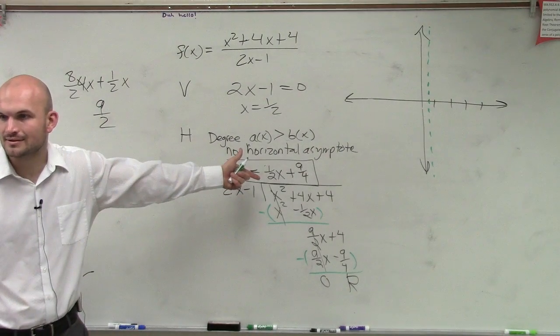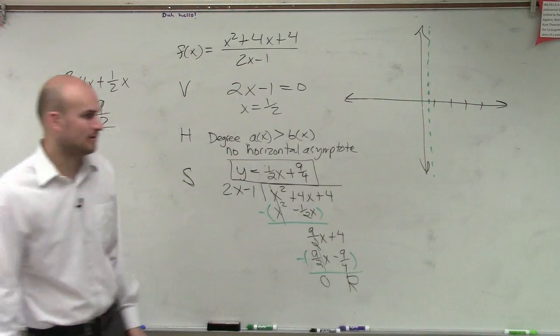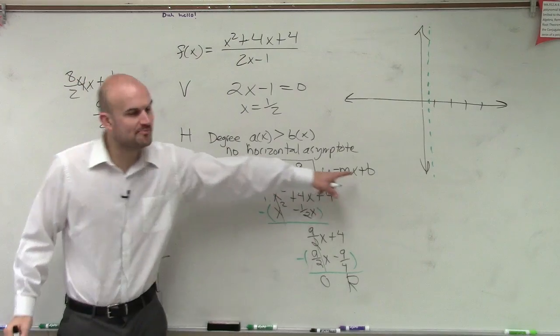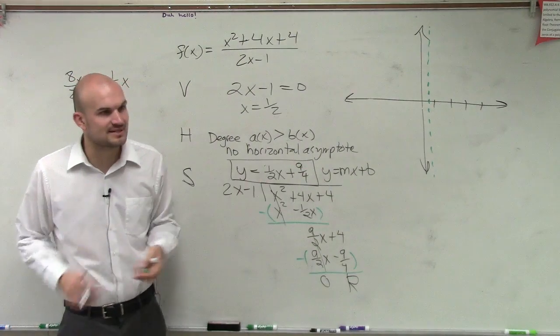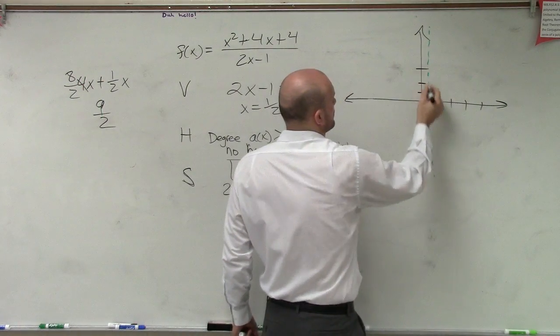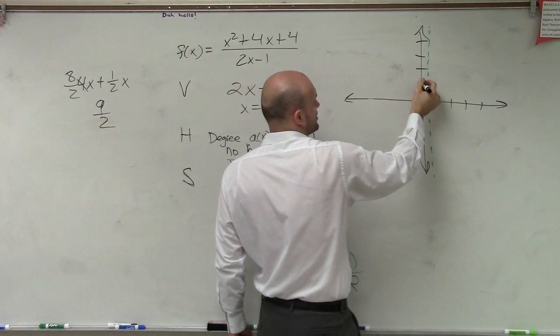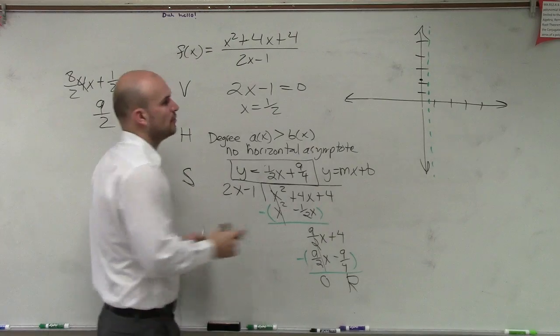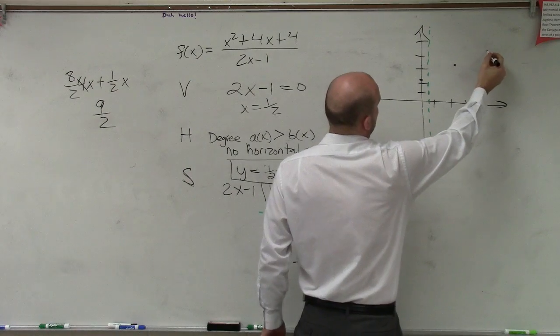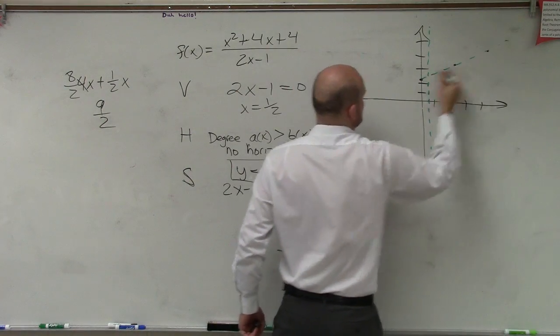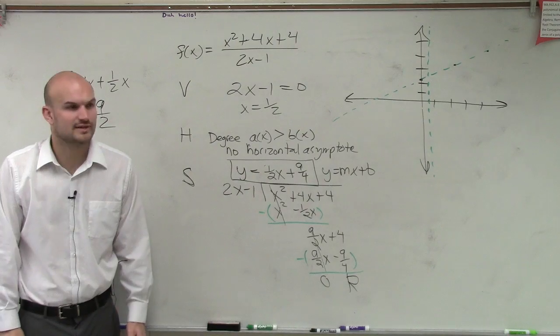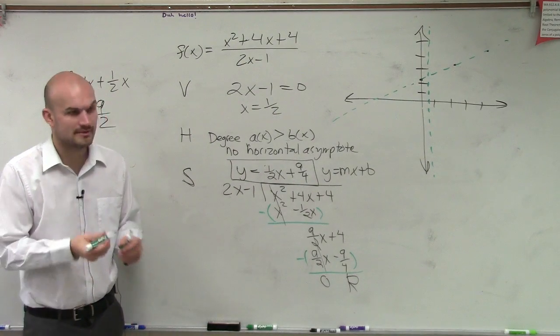So now we need to graph that. So how are you going to graph that? Well, remember, all linear equations we can write in y equals mx plus b form, where b is my y-intercept. So the y-intercept is that 9 fourths, which is 2.25. So let's just go up to 2. 2.25 is going to be roughly around there. And then we're going up 1 over 2. Up 1 over 2. Up 1 over 2. So we're roughly going to have a graph or an asymptote that's going to follow that line. Does everybody see what I did with that?